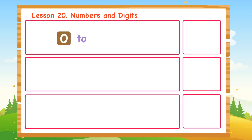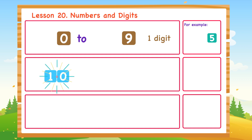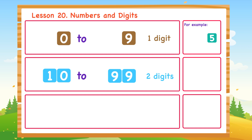Numbers 0 to 9 are 1-digit numbers because they are formed by 1 digit. For example, number 5 is a 1-digit number because it is formed by 1 digit. Numbers 10 to 99 are 2-digit numbers because they are formed by 2 digits. For example, number 12 is a 2-digit number because it is formed by 2 digits.